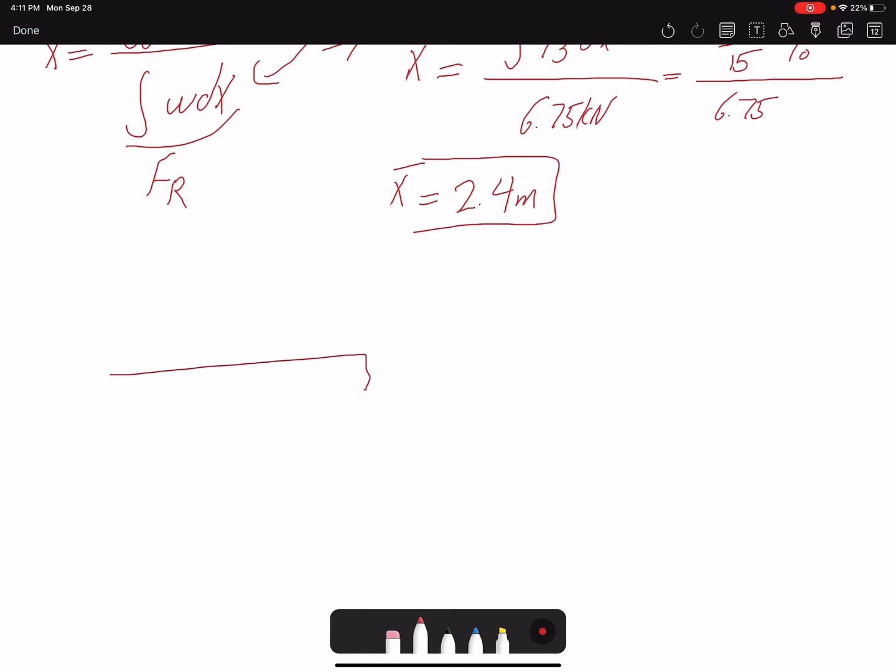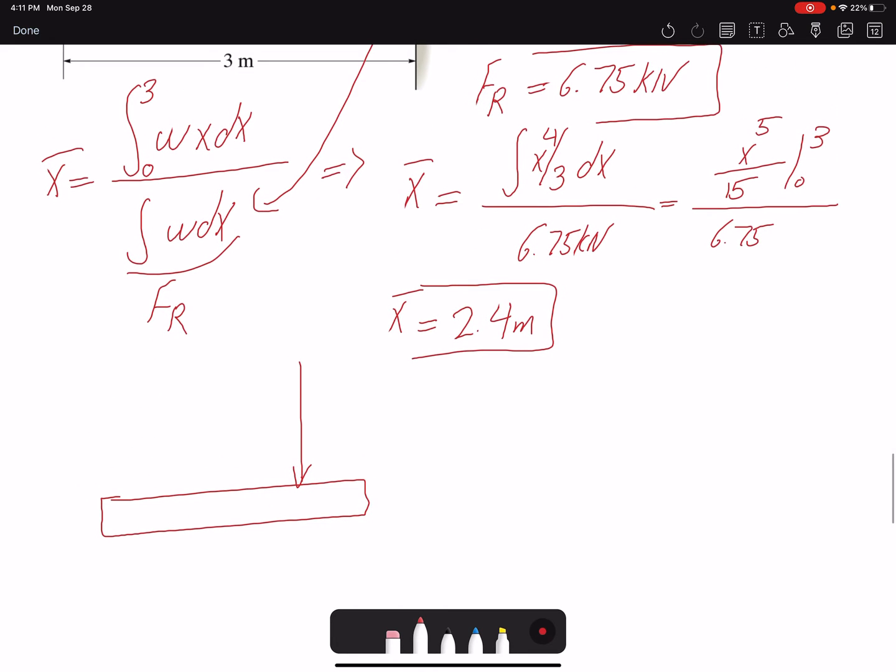We need to find the equivalent based on the point that the problem is asking. So let's see what we have now. So far we have FR which is 6.75 kN, and we know where it's acting—this distance is 2.4 meters.